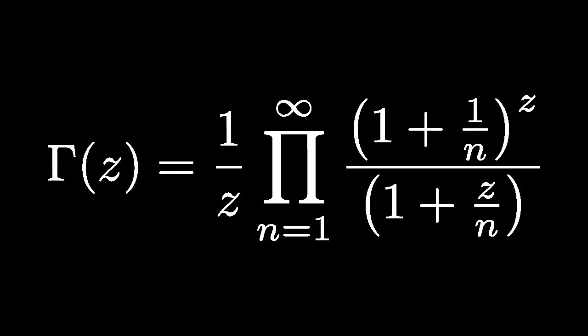This formula is due to Euler. It is valid except when z equals 0, minus 1, minus 2, and so on.